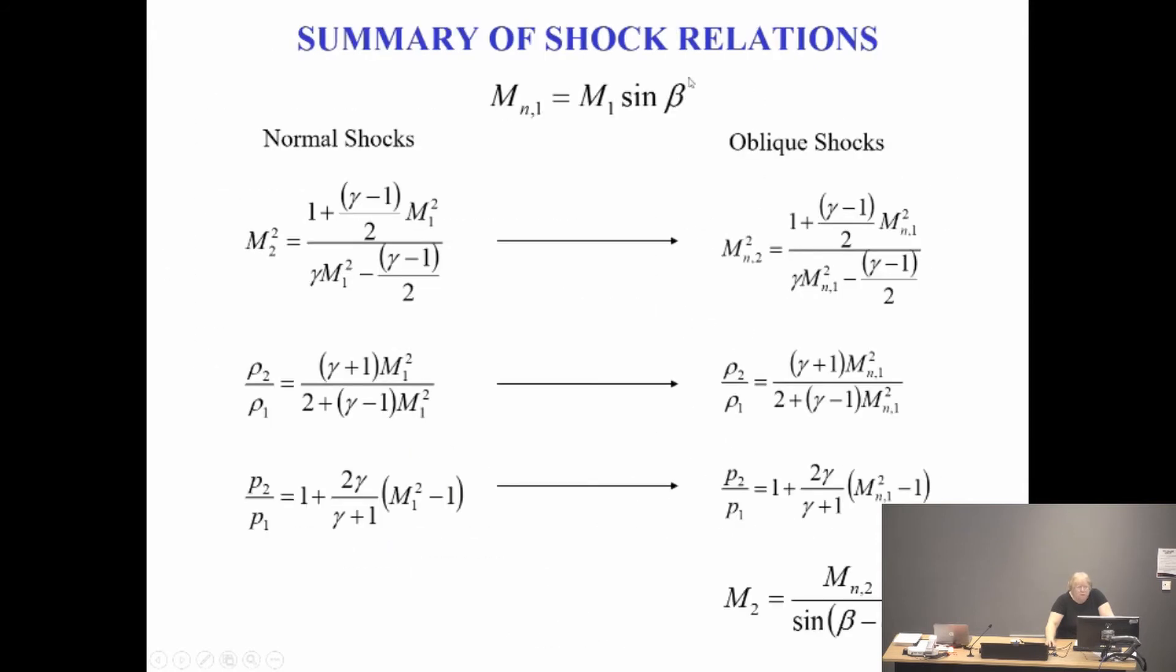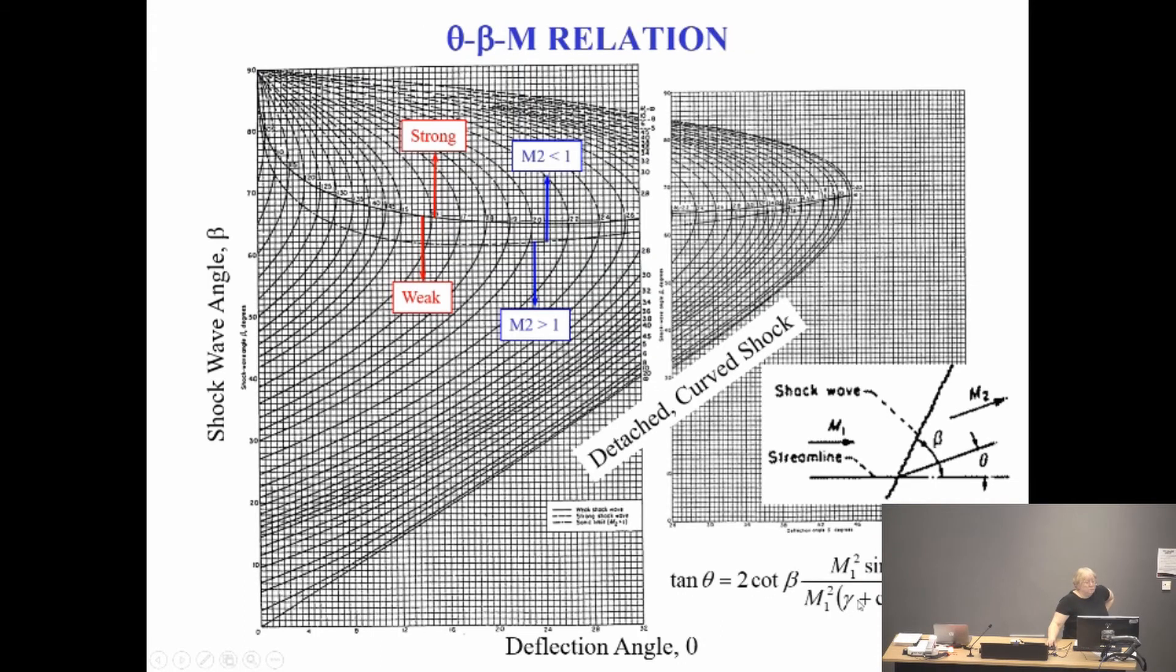So M1N, normal component in Mach 1, is M1, as in the Mach number in region 1, times sine of the actual shock angle itself. When you're into region 2, we've actually got that theta in there as well. It's been deflected again. So that normal component is a slightly different value.